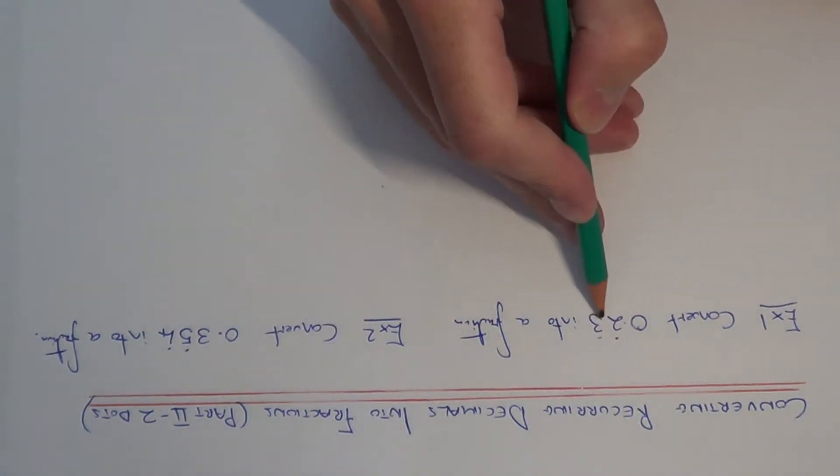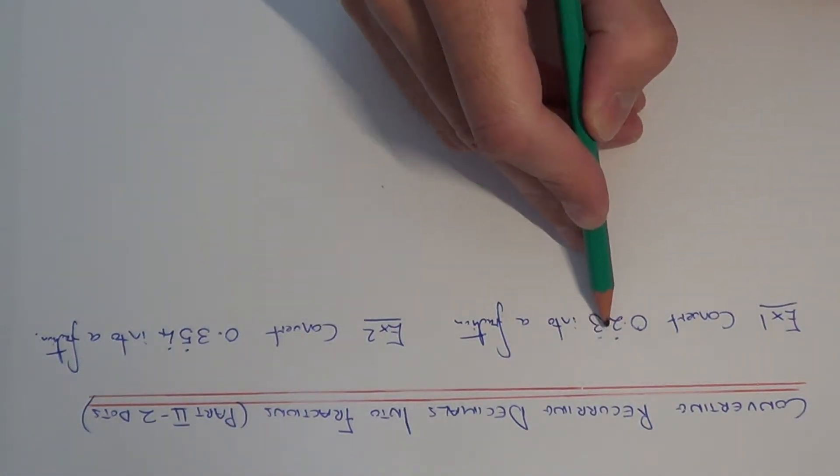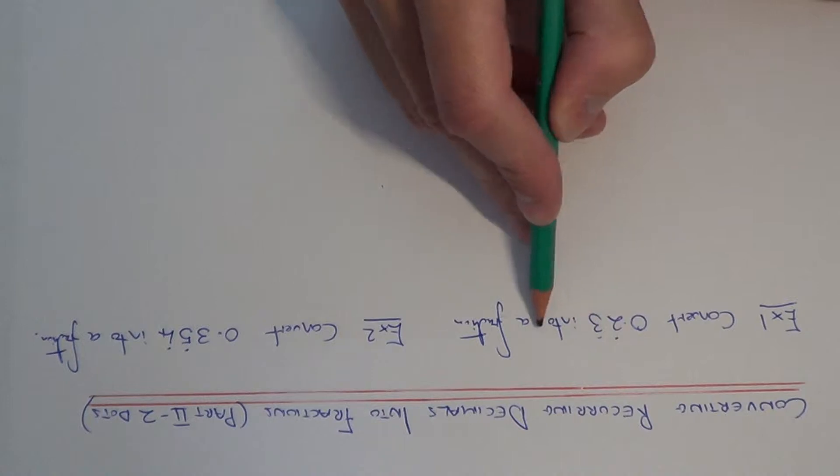First of all let me just explain what these two dots mean. This means the 2 and the 3 is repeating at the end, so everything between the two dots gets repeated.